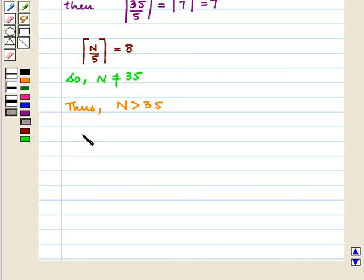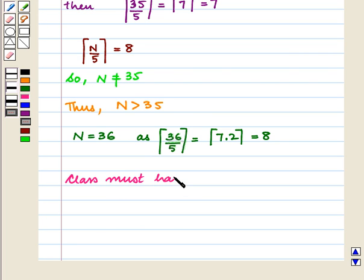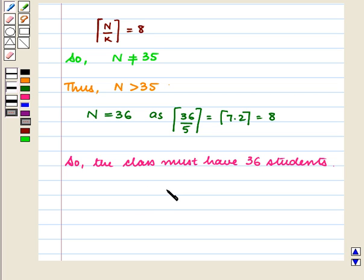So the next least possible value will be n equal to 36, as the ceiling of 36 upon 5 equals the ceiling of 7.2, which equals 8. So the class must have 36 students. This completes our session. Hope you enjoyed this session. Thank you.